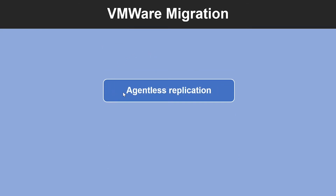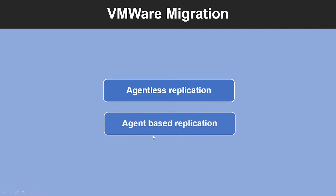When it comes to VMware migration, VMware VMs can be migrated using Azure Migrate server migration. There are two options available: agentless replication and agent-based replication. With agentless replication, you can migrate VMs without needing to install anything on them. With agent-based replication, you install an agent on the VM for replication.